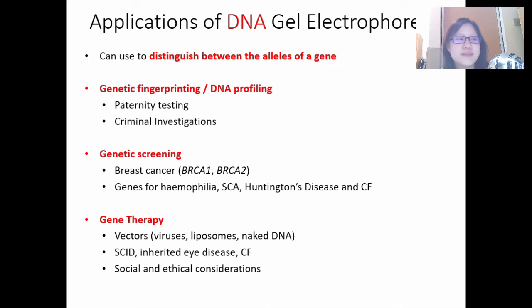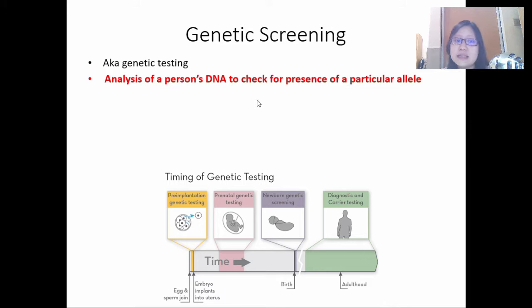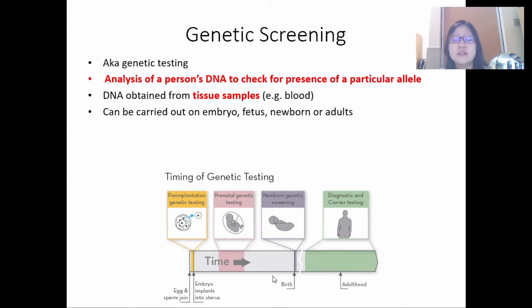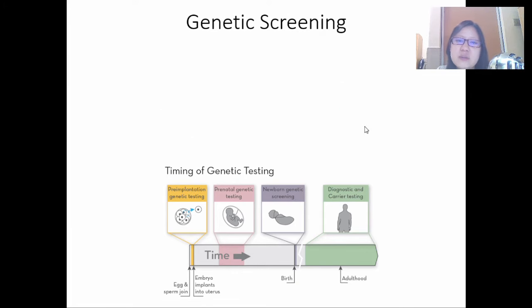Genetic screening, also called genetic testing, is the analysis of a person's DNA to check for the presence of a particular allele — usually a disease allele. DNA is usually obtained from tissue samples such as blood or just a few cells. This can be carried out on an embryo, fetus, newborn, or adults. There are four types in the syllabus, and there are also some important examples you need to learn.